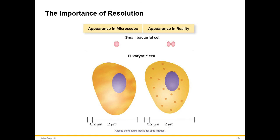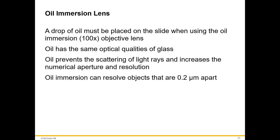Oil immersion: a drop of oil must be placed on the slide when using the oil immersion objective lens. Oil has the same optical qualities of glass. It prevents the scattering of light rays and increases the numerical aperture and resolution. Oil immersion can resolve objects that are 0.2 micrometers apart. Adding oil and using the 100x objective allows us to have a higher resolving power.